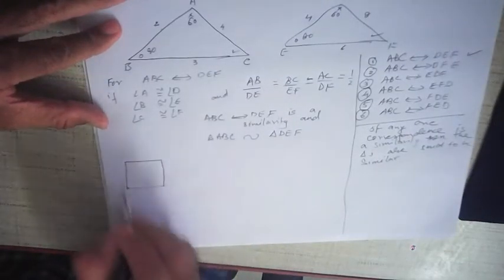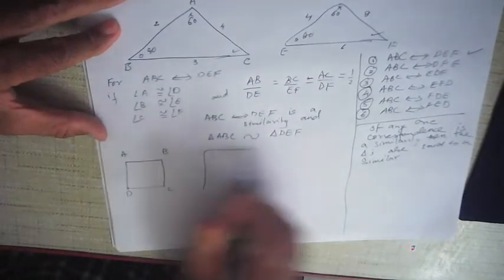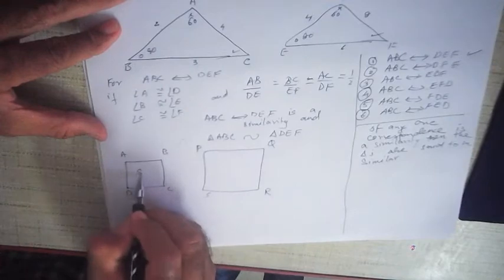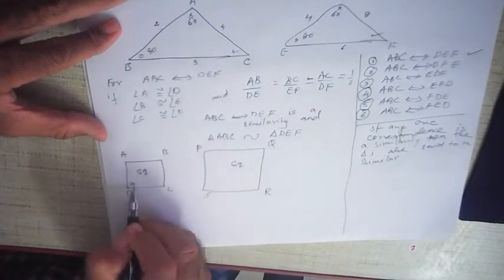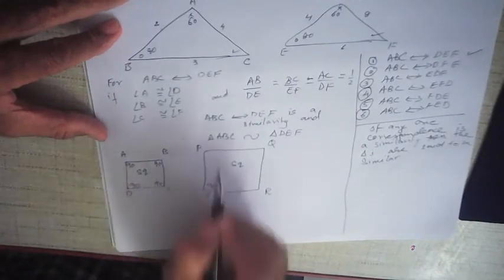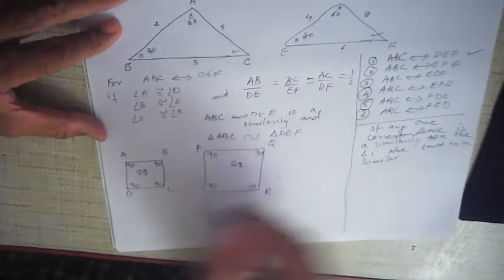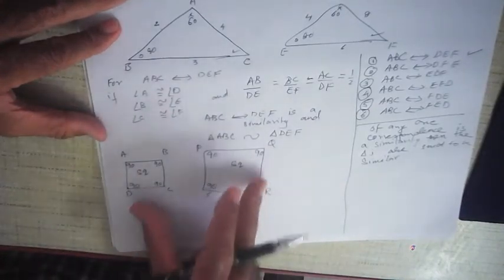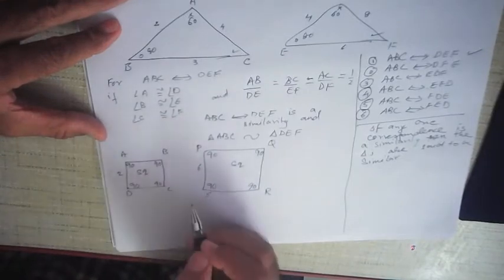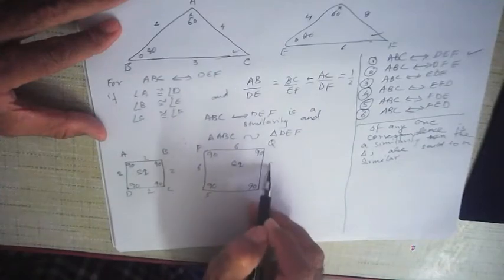Let us take a square ABCD and another square PQRS. Both are squares, so all the angles are 90 degrees in both. The angles are the same. In a square, all the sides are equal, so if ABCD has side 2 cm, all its sides are 2. If PQRS has side 6 cm, all its sides are 6. Therefore AB/PQ = 2/6 = 1/3, BC/QR = 1/3, CD/SR = 1/3, AD/PS = 1/3.